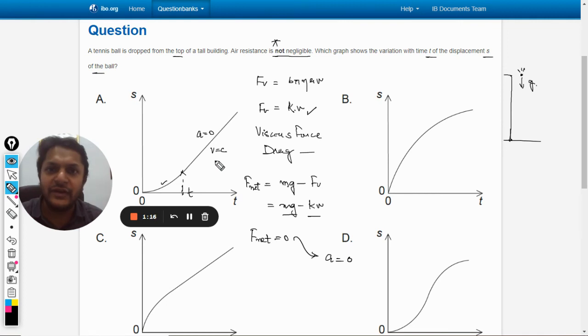But in IB examinations it is not neglected, so we have to be very careful when we are handling this kind of question. By the way, this velocity at which the drag force becomes zero, this velocity is known as vt, terminal velocity.